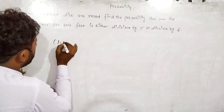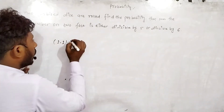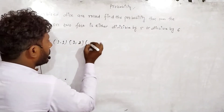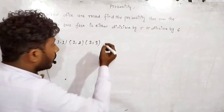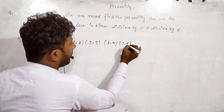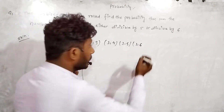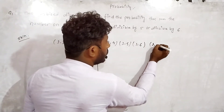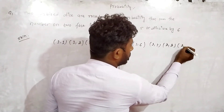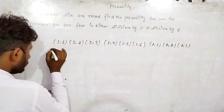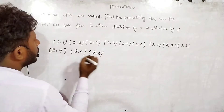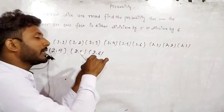Starting with die one showing 1: we have (1,1), (1,2), (1,3), (1,4), (1,5), (1,6). Then die one showing 2: (2,1), (2,2), (2,3), (2,4), (2,5), (2,6).